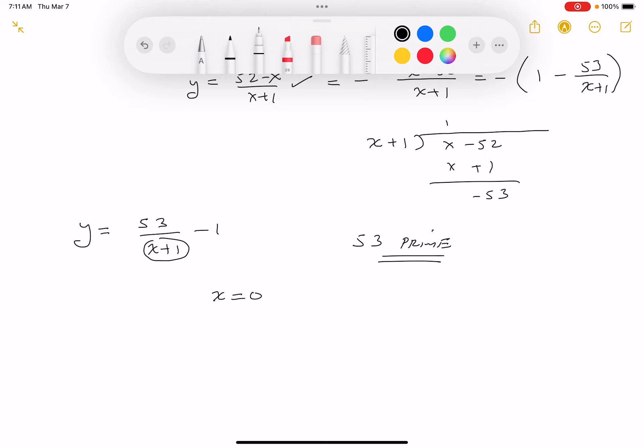All right, if you did that, let's go through it. What would y equal? Well, if x is 0, you get 0 plus 1, which is 1, and 53 divided by 1 is 53. 53 minus 1 is 52. This is one answer.